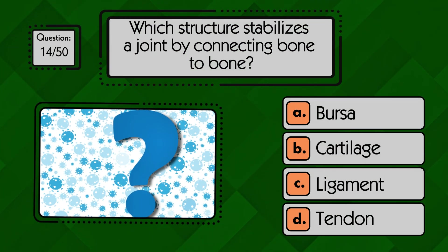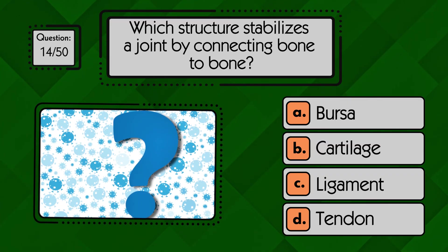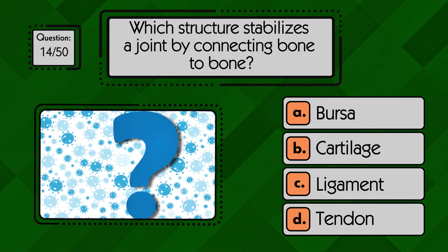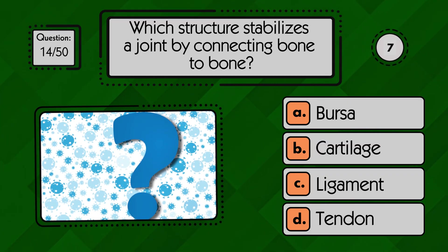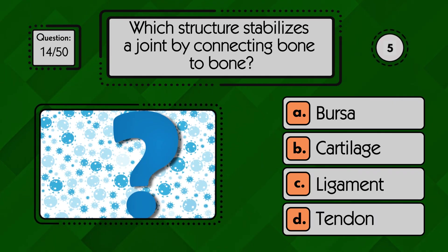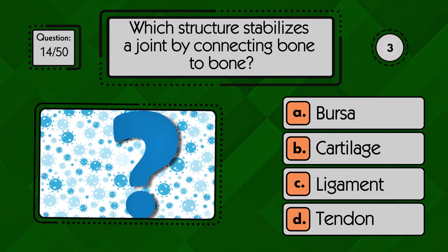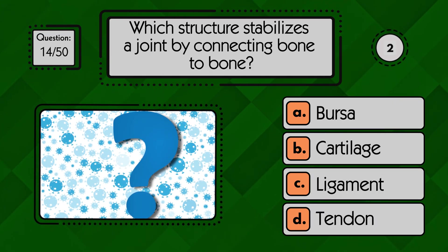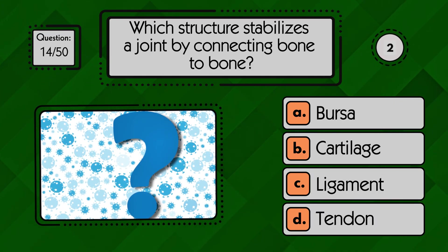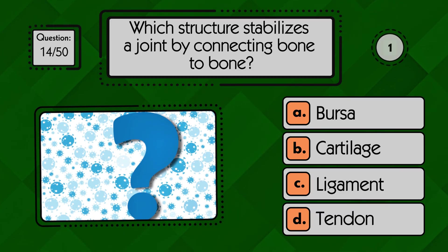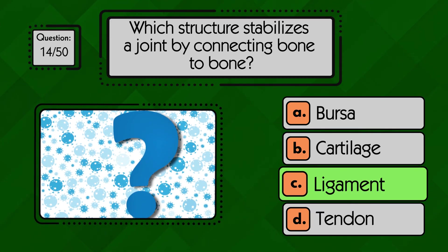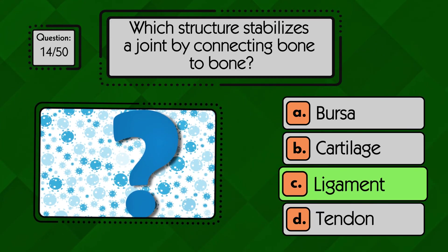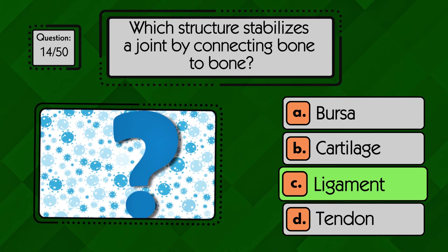Which structure stabilizes a joint by connecting bone to bone? A ligament stabilizes a joint by connecting one bone to another.